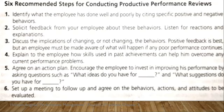The second step is soliciting feedback from the employee about these behaviours and listening for reactions and explanations, so that a particular behaviour can be linked to a specific situation or the employee's perception. The third step involves discussing the implications of changing or not changing those behaviours. Positive feedback is ideal, but if an employee has received negative feedback, they must be made aware of it and the consequences of poor performance should be communicated, making the employee alert on areas for improvement.